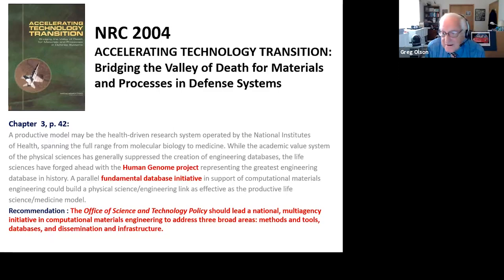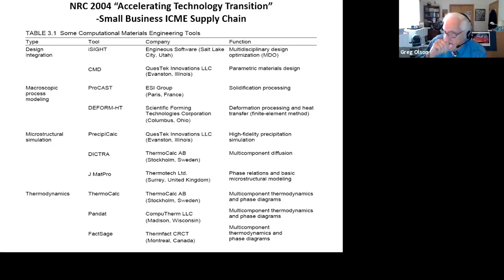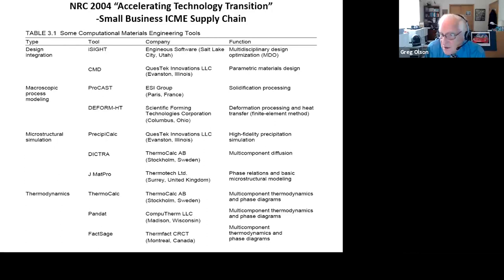There have been many academy studies acknowledging the new opportunity of computational materials engineering, but what was unique about the 2004 study was the leading role of a global network of small businesses that created and maintained this technology. A list was constructed in that report of demonstrated successes of the technology at that time. The principal mechanism by which this technology moved into major corporations has been by acquisitions, affecting about a third of the companies on this chart — so small business really did create this technology and lead the way.